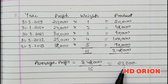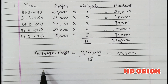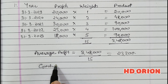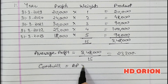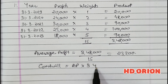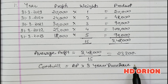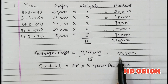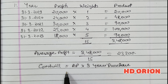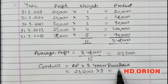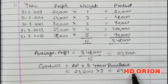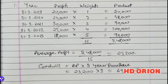Now based on this, goodwill will be calculated. Goodwill = Average Profit × Number of Years Purchase. It means the firm is expecting the same average profit in the next 3 years — that is the meaning of 3 years purchase. So Goodwill = 23,200 × 3 = Rs 69,600. This is the value of goodwill for the firm.